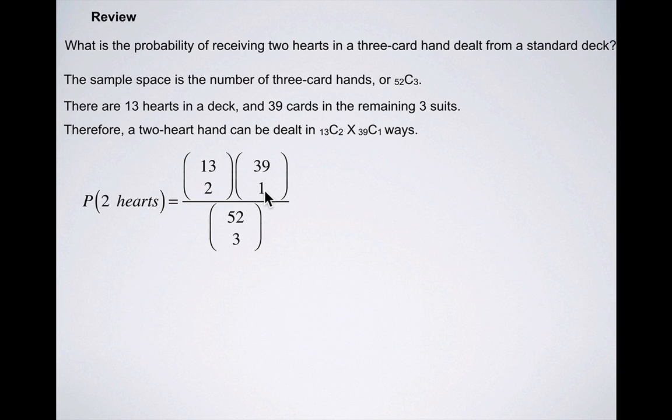13 choose 2 times 39 choose 1 will be the number of ways that we can have a hand of three cards dealt where the result is two hearts exactly, divided by 52 choose 3. And this works out to be approximately 13.8%, or 0.138.